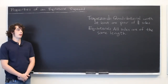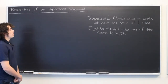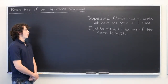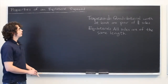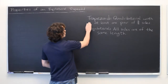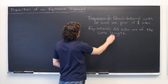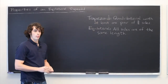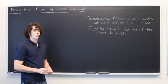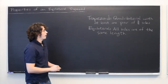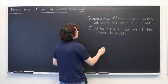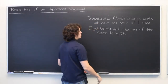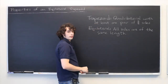Before we can begin, it is important that we have clear, unambiguous definitions of what the terms mean. So first, trapezoid. There are several different definitions of what a trapezoid is, but we will be using the most inclusive variety. A trapezoid is simply any quadrilateral with at least one pair of parallel sides.